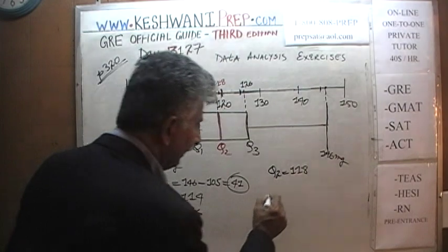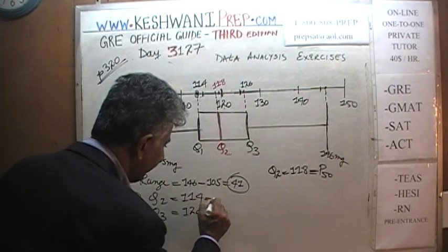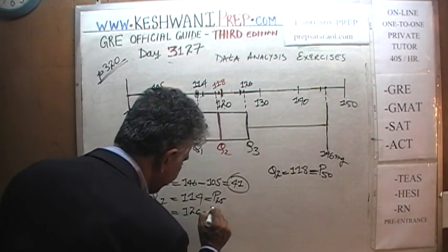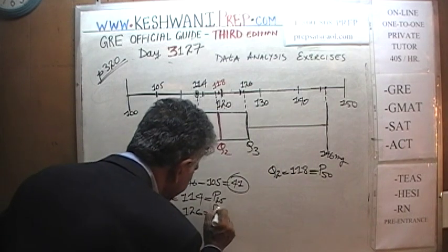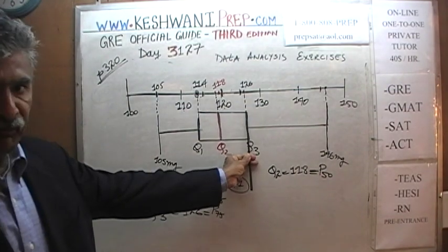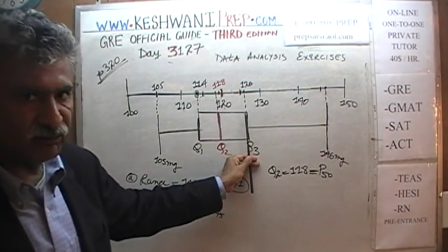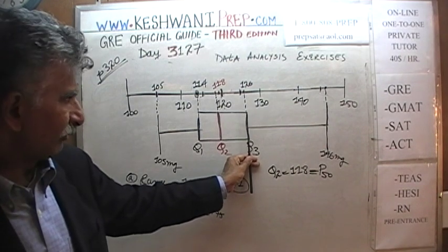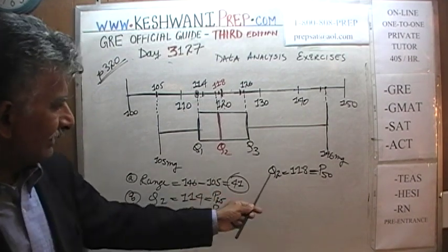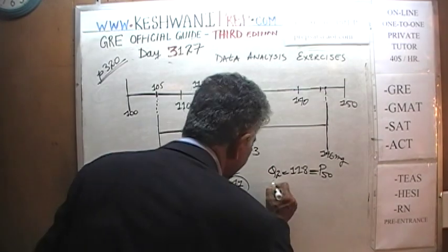The second quartile is the same as the 50th percentile. Just like the first quartile is the 25th percentile — 25% of observations were below it — and the third quartile is the 75th percentile, where 75% of observations were below this value. If it's the 50th percentile or second quartile, then it's also our median.